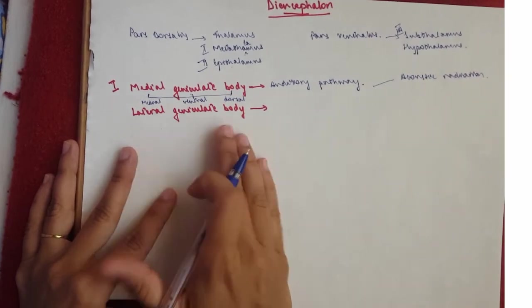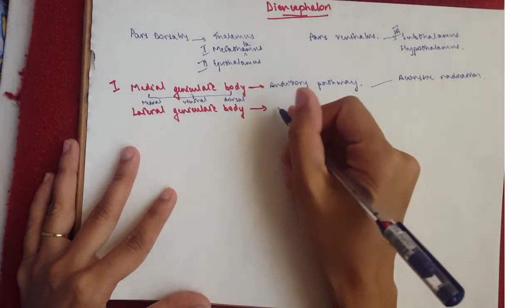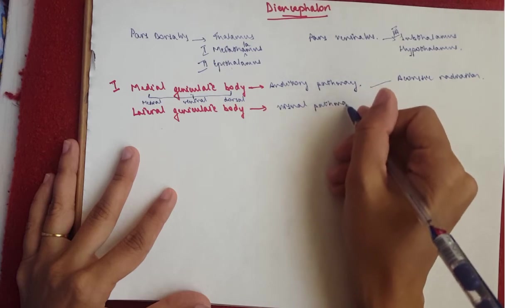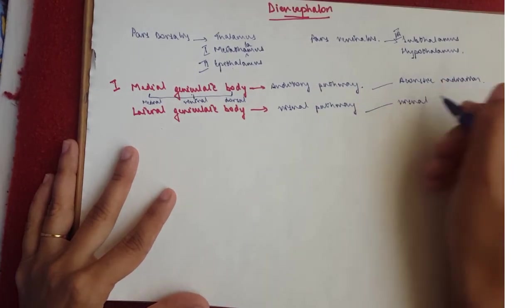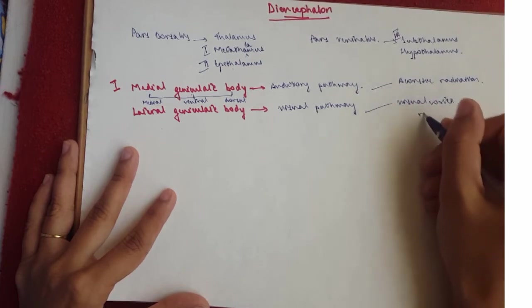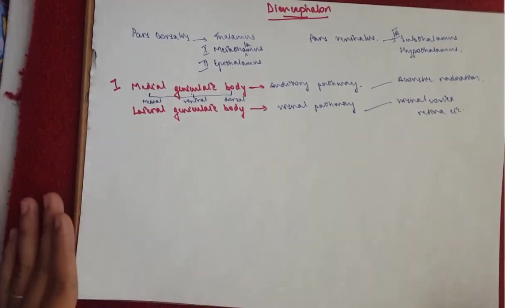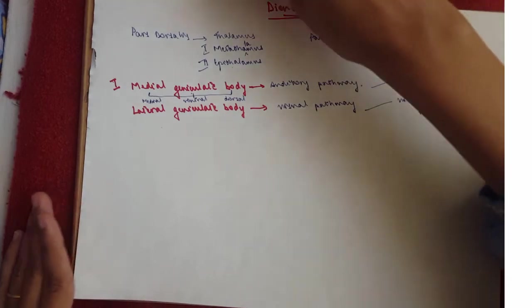Then we've got the lateral geniculate body, which receives from the superior colliculus because it's for the visual pathway. It's a relay station for the visual pathway. And obviously it will send it to the visual cortex, which if you remember is 17, 18, 19, and to the retina. That is it for the metathalamus.